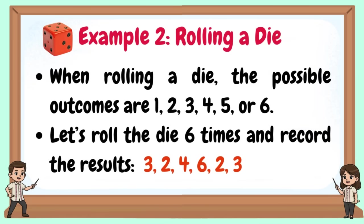Example 2: Rolling a die. When rolling a die, the possible outcomes are 1, 2, 3, 4, 5, or 6. Let's roll the die six times and record the results: 3, 2, 4, 6, 2, 3.